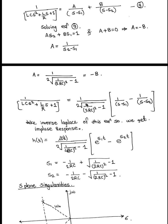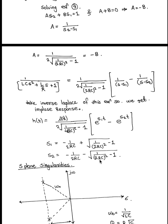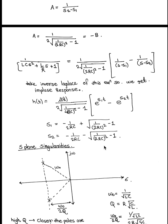We get an equation, and after applying inverse Laplace transformation on this equation we get our impulse response h(t), where u(t) is a unit step function and s1 and s2 are the roots of the quadratic equation.